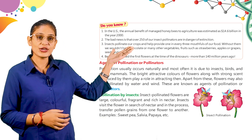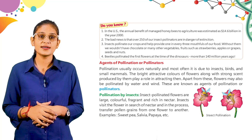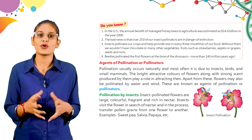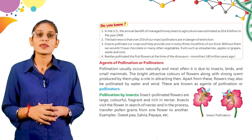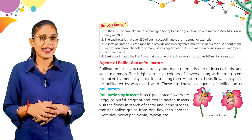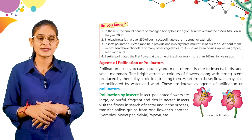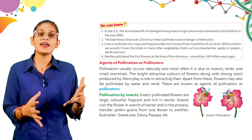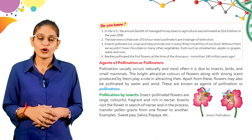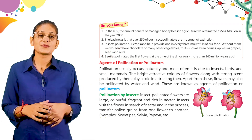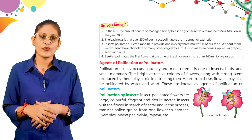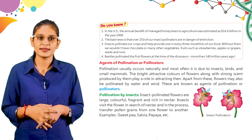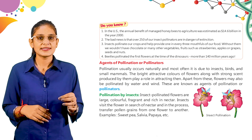Now we have Agents of Pollination, or pollinators. Pollination usually occurs naturally and most often it is due to insects, birds, and small mammals. The bright attractive colors of flowers along with strong scent play a role in attracting them. Apart from these, flowers may also be pollinated by water and wind — these are all known as agents of pollination or pollinators. Pollination by insects: insect-pollinated flowers are large, colorful, fragrant, and rich in nectar. Insects visit flowers in search of nectar and in the process transfer pollen grains from one flower to another. Examples: sweet pea, salvia, papaya.